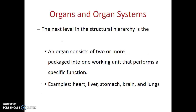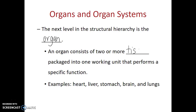The next level of structure in the biological hierarchy is the organ. We define an organ as consisting of two or more tissues, packaged into one working unit that performs a specific function. Organs are things you've heard of before, like the heart, your liver, your stomach, your brain, your lungs — structures that we're familiar with.